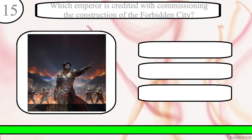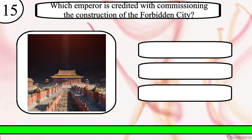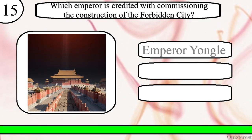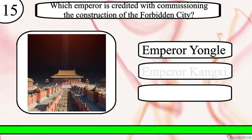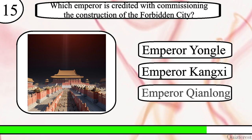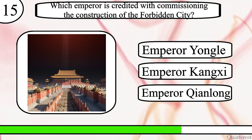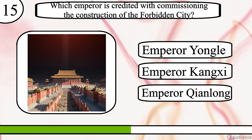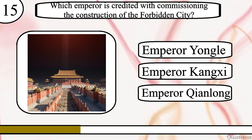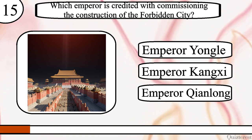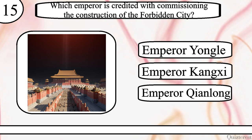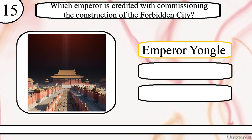Question 15. Which emperor is credited with commissioning the construction of the Forbidden City? Emperor Yongle, Emperor Kangxi, or Emperor Qianlong? The correct answer is Emperor Yongle.